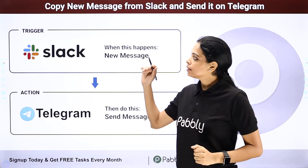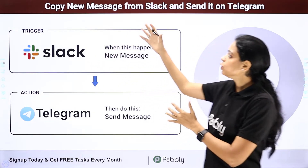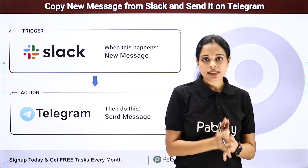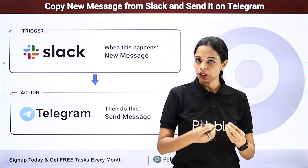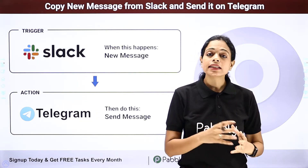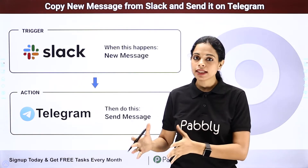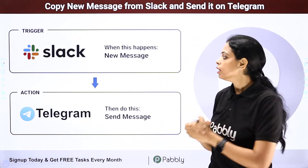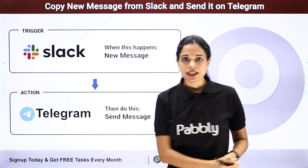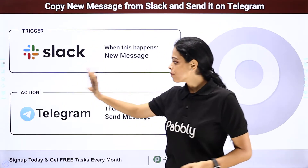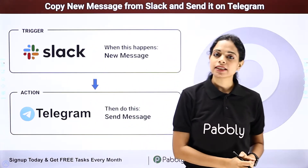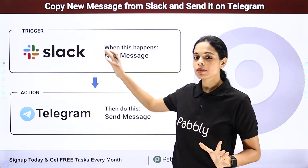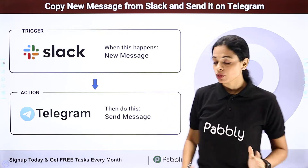Let's understand how you can copy new messages from Slack and send them to Telegram. Let's say that your entire team is sitting on Slack — you have got information, you have got different messages — and now you have another channel on Telegram, specific channels where you want to share those messages. This can easily be done by integrating these two applications. The trigger application would be Slack, the action application would be Telegram, and you can simply share all your Slack messages on Telegram. This is going to be really easy for you.